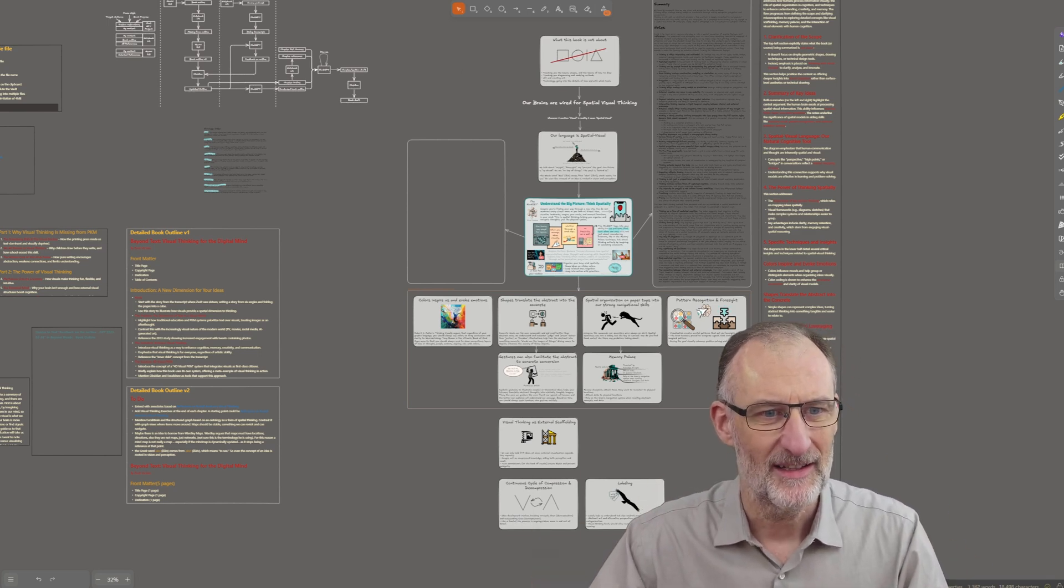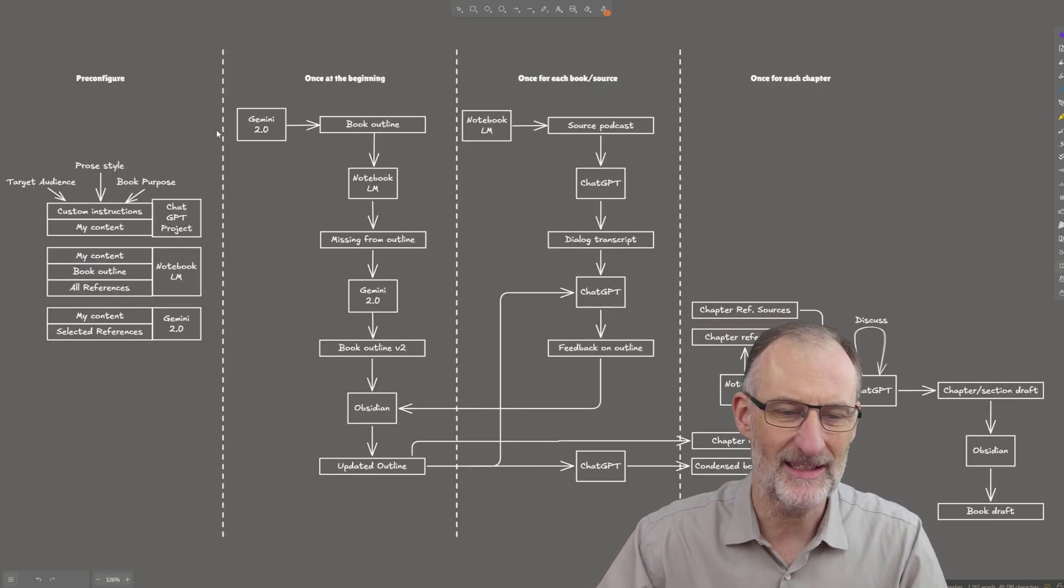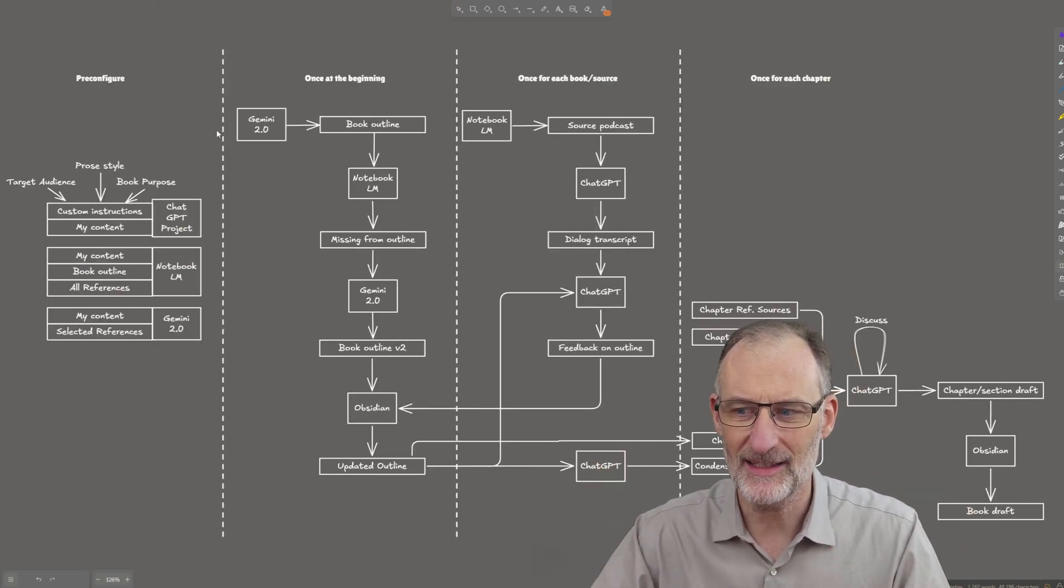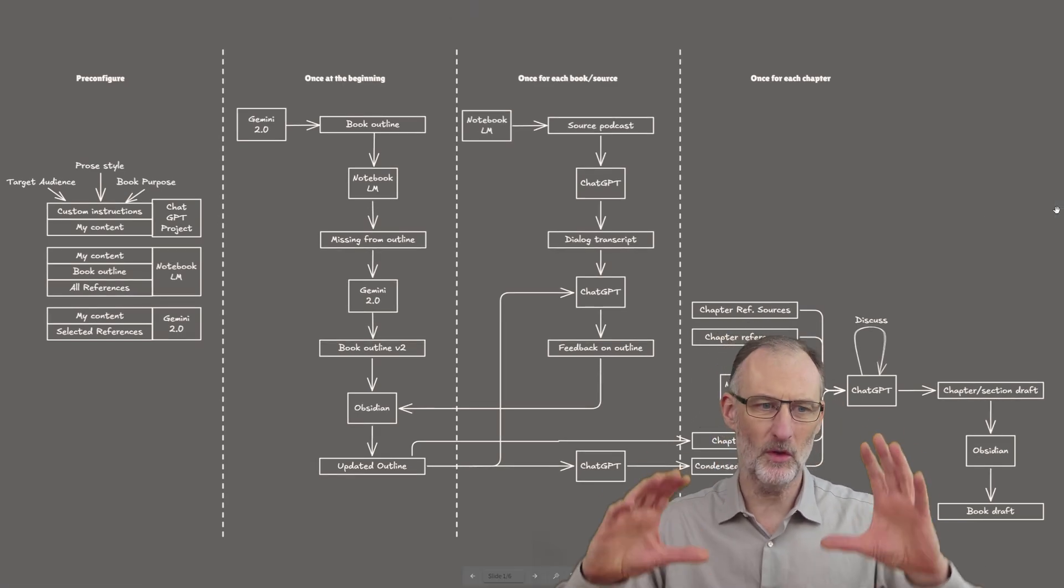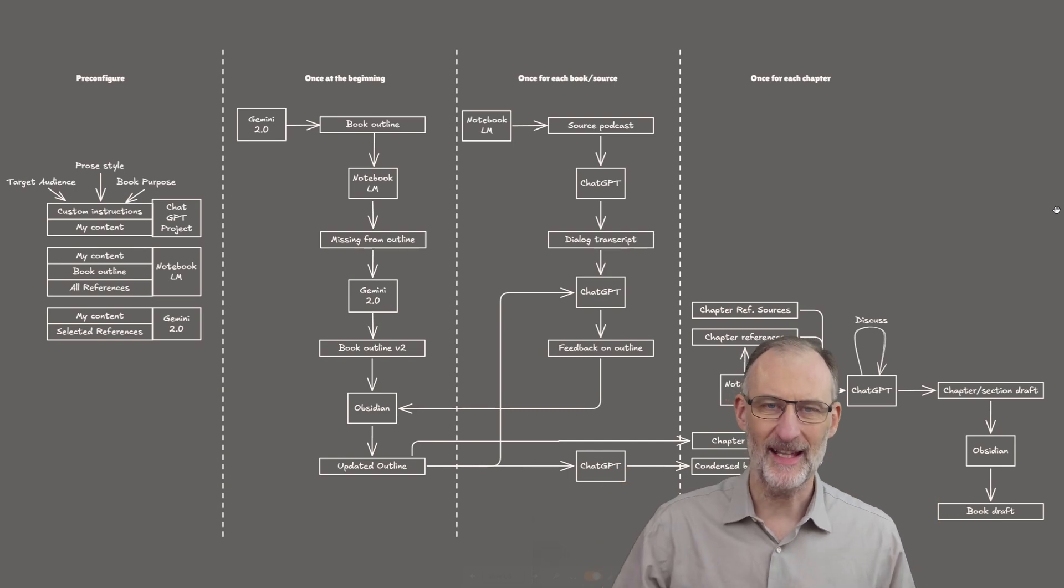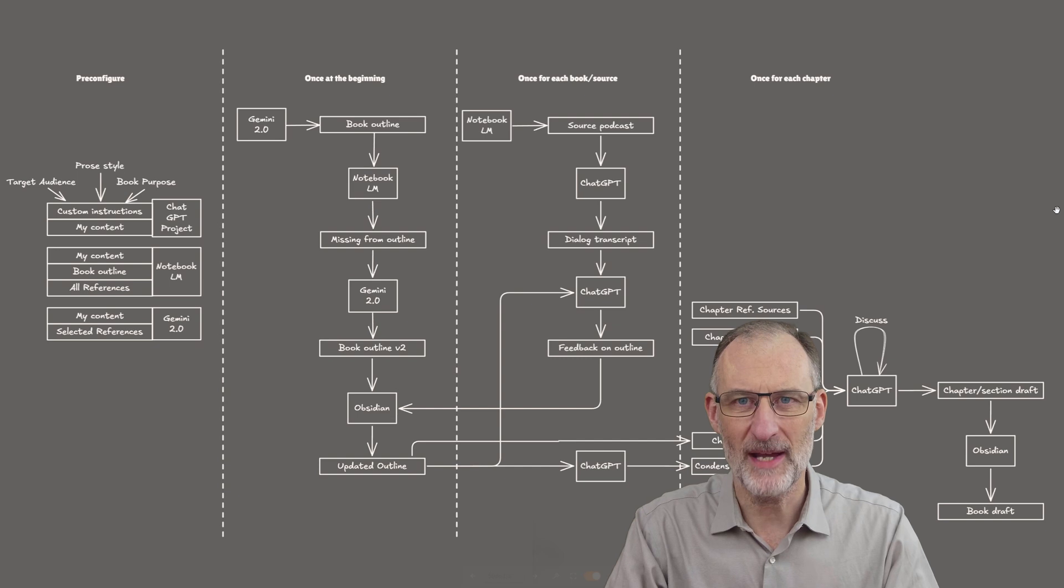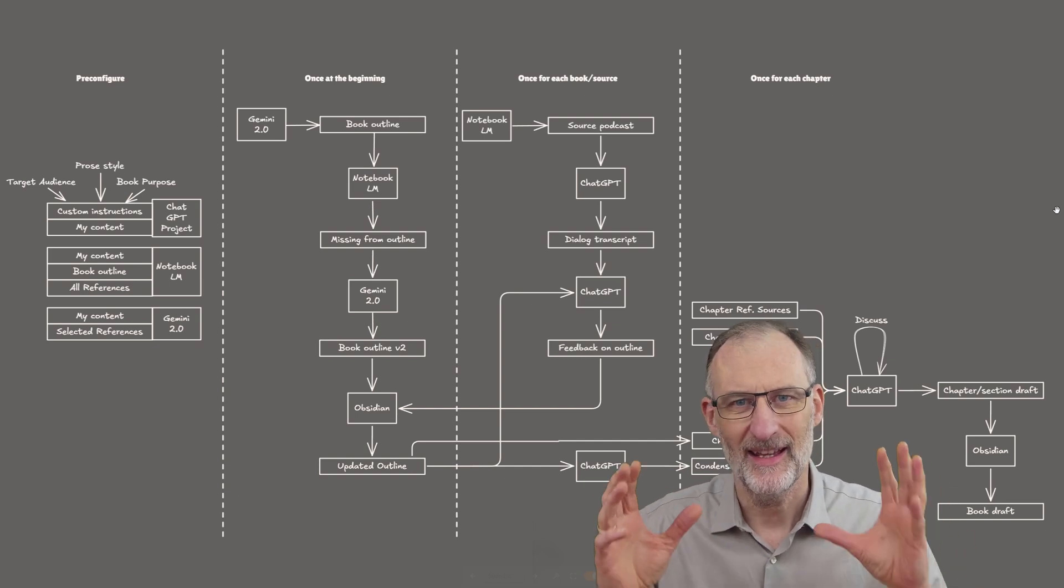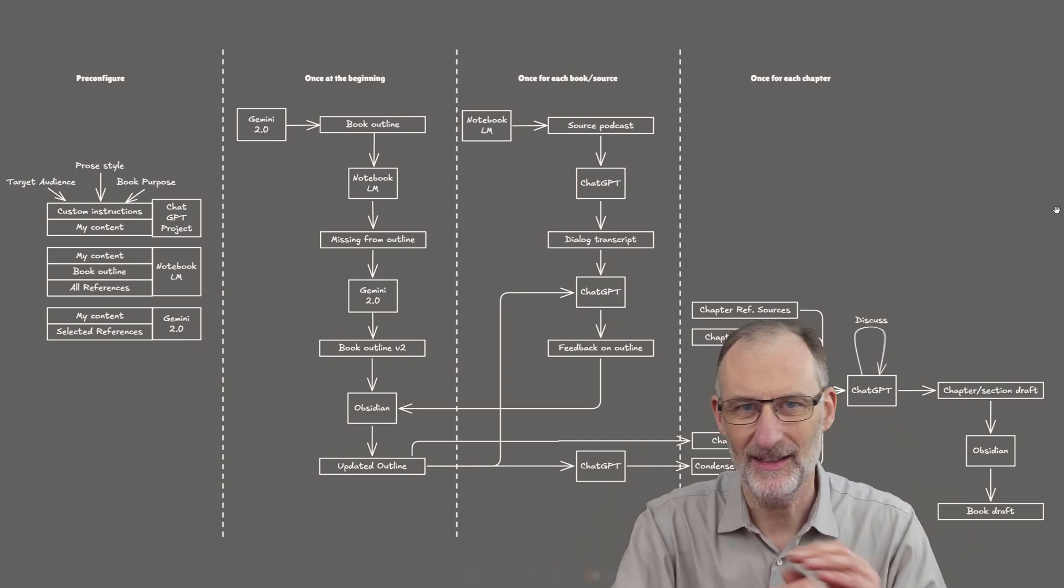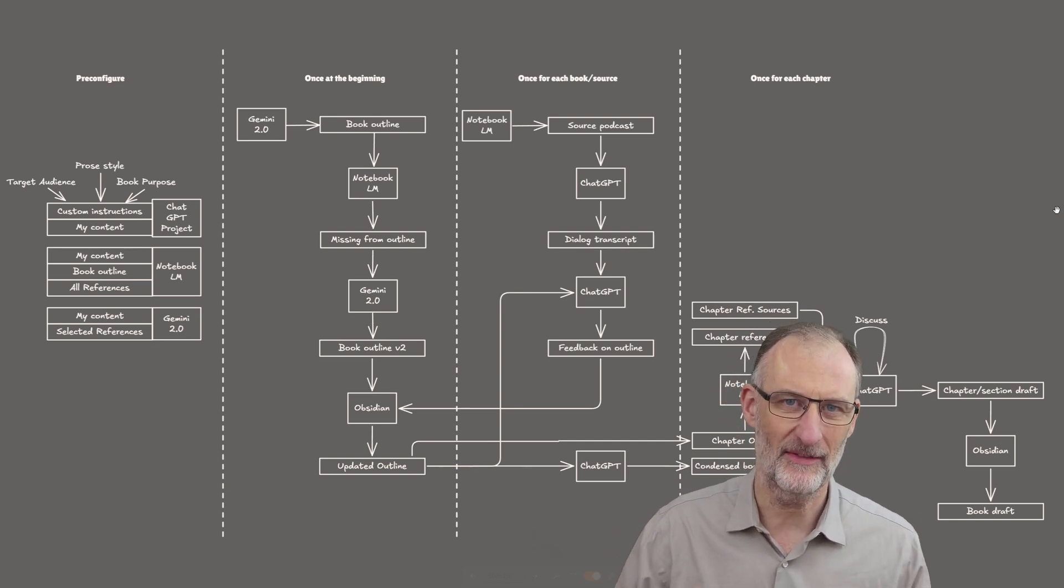So instead, because in the end I need to produce a book and that's about producing text, I went for this process, and let me just quickly walk you through how I'm now generating text, and I actually am getting some traction. So I already have two chapters delivered, and if I had a full day where I can only concentrate on this, I could get the entire book draft out.